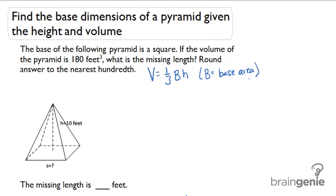Okay let's read the problem. The base of the following pyramid is a square. If the volume of the pyramid is 180 cubic feet, what is the missing length? Round your answer to the nearest hundredth.